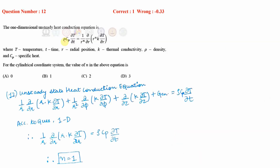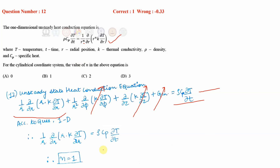They have given a one-dimensional unsteady state heat conduction equation and are asking for the value of n. Recalling the unsteady state heat conduction equation in cylindrical coordinate system and applying the 1D condition, the two extra terms cancel out. Comparing the resulting equation with the given one, the value of n is 1. The correct option is B.